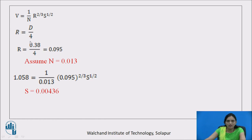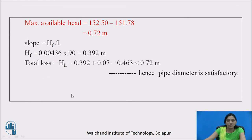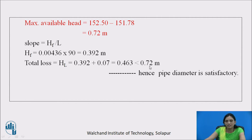Using Manning's formula, find the slope by substituting the calculated velocity, Manning's constant, and hydraulic mean radius. Slope = 0.00436. Check head loss: frictional head loss = slope × length = 0.00436 × 90 = 0.392 m. Total head loss = 0.392 + 0.07 = 0.462 m (shown as 0.436 in the calculation), which is less than the available head of 0.72 m. Hence, the 380 mm diameter pipe is satisfactory for Barrel 2.